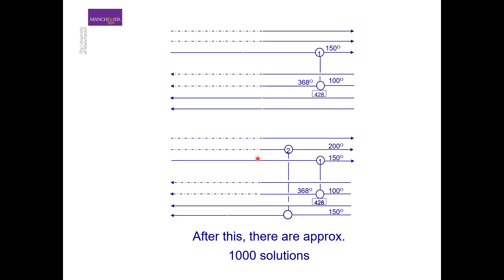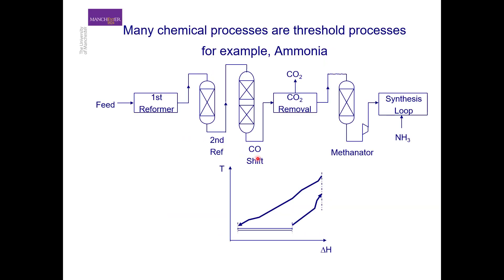Once we move to higher temperatures there is a considerable degree of freedom, and consequently many solutions can be achieved. As a typical example of threshold problems, consider the production of ammonia. In ammonia production, large amounts of heat are available from the hot streams, which must lose significant heat as they reach their target temperatures, while the cold streams have a smaller heat requirement. Because of the very high temperatures present, there is no requirement for hot utility — only cold utility is required — making the ammonia production process a threshold process.